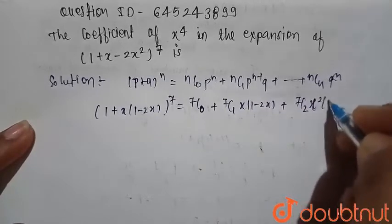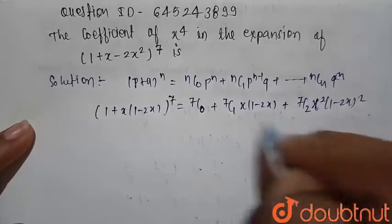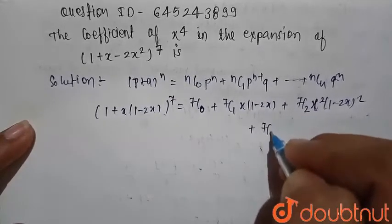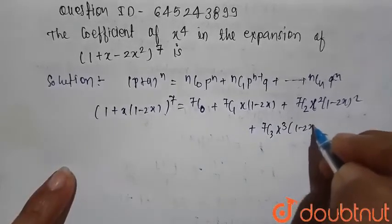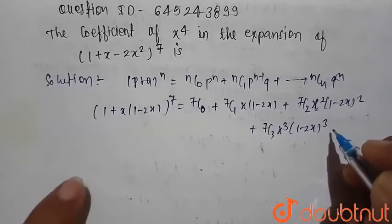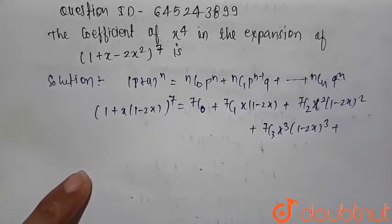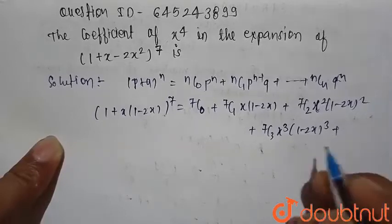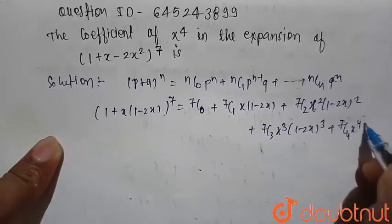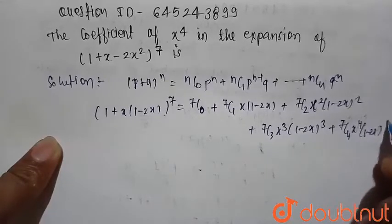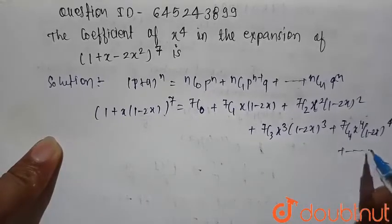Plus similarly 7C2 into x squared into 1 minus 2x whole square, plus 7C3 x cubed into 1 minus 2x raised to power 3, plus 7C4 x raised to power 4 into 1 minus 2x raised to power 4, and so on till the last term.